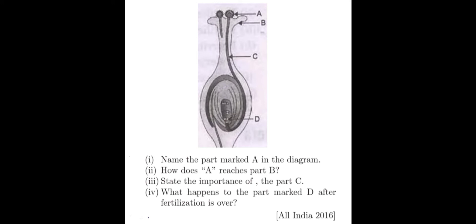Here is question number 7. Observe the diagram. This diagram shows the germination of pollen grain on stigma. Four questions are here. First question, name the part marked A in the diagram. Second question, how does A reach part B? Third one, state the importance of part C. Fourth question, what happens to the part marked D after fertilization is over?